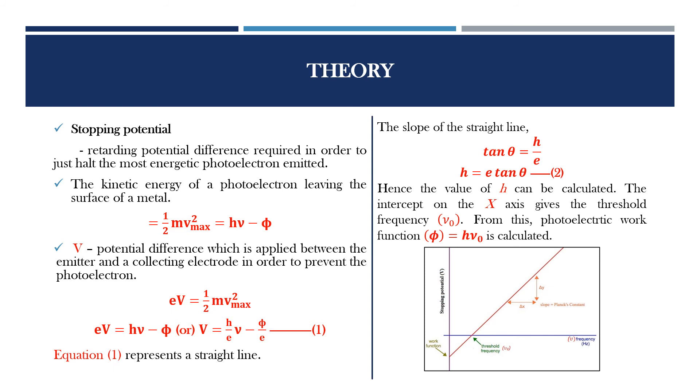The intercept on the x axis gives the threshold frequency which is denoted by nu naught. From this photoelectric work function, phi equals h nu naught is calculated.